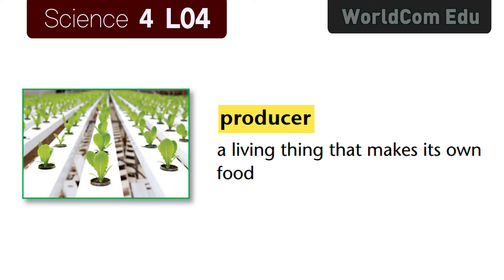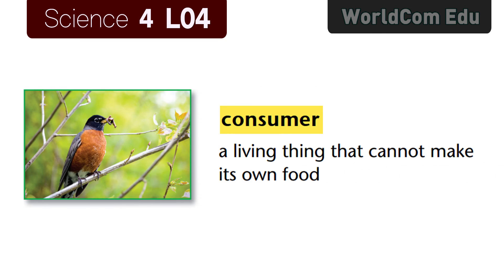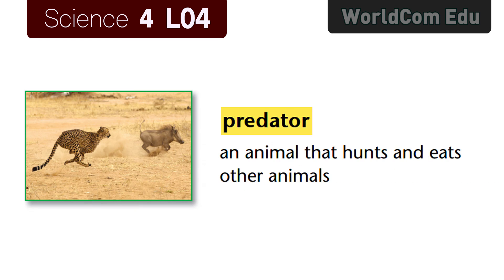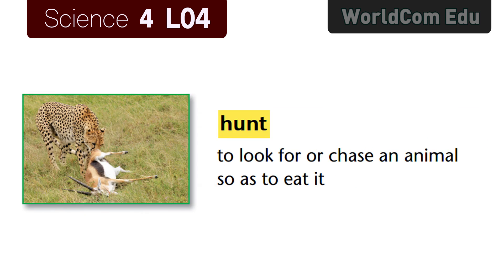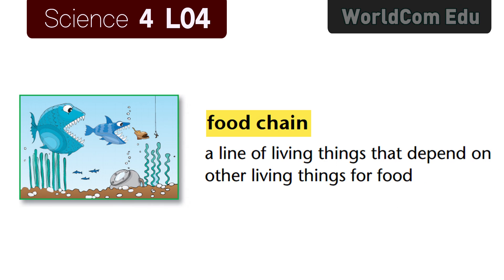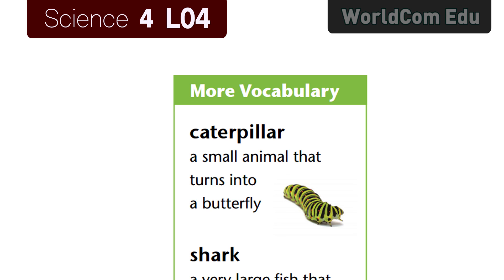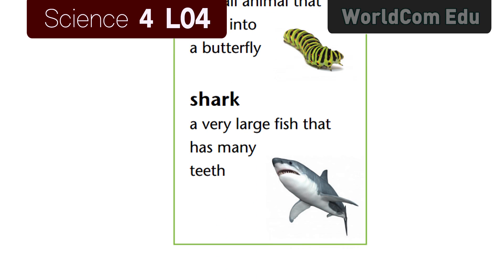Lesson four vocabulary review — Food Chain. Producer: a living thing that makes its own food. Consumer: a living thing that cannot make its own food. Predator: an animal that hunts and eats other animals. Prey: an animal that is hunted and eaten by another animal. Hunt: to look for or chase an animal so as to eat it. Food chain: a line of living things that depend on other living things for food. Caterpillar: a small animal that turns into a butterfly. Shark: a very large fish that has many teeth.